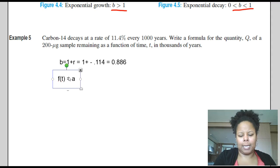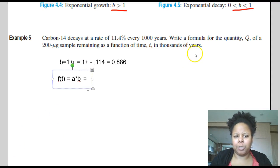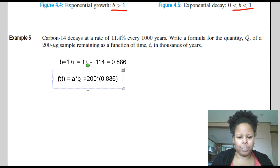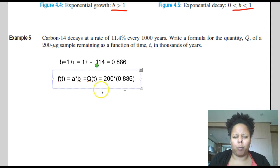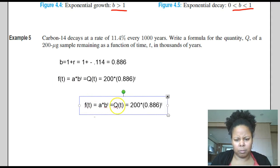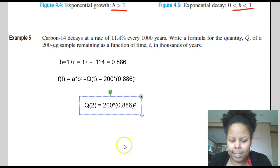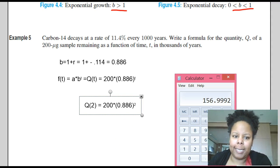So if you remember, f of T looks like A times B raised to the T power, where A is our initial amount. They said the sample initially was 200 micrograms. And then we found out that our B was 0.886. And we raise that to the T. So they did say to write the formula for Q of T. So we're going to call this Q of T. And if I want to figure out how much of the sample will be left after 2,000 years, then all I have to do is evaluate this function when T is 2. And the answer I get is exactly 156.992 micrograms sample remaining after 2,000 years.